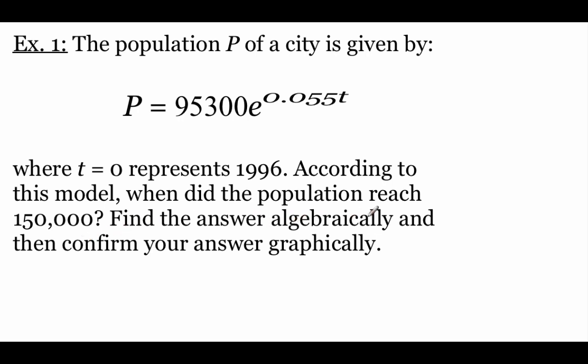We're going to start off by finding our answer algebraically, and then we're going to check our answer using a graph. This P value on the left-hand side is our population, and we're trying to figure out when that population is 150,000. So I'm just going to replace the P on the left-hand side with 150,000 equals 95,300 times e raised to the 0.055t power.